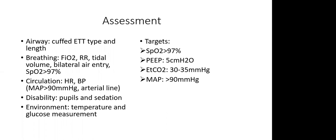Following the ABC approach, assess breathing: the FiO₂, tidal volume, and bilateral air entry. Importantly, it's not enough to just look at the SpO₂ — you need to know at what FiO₂ it was achieved. A patient with SpO₂ 97% at FiO₂ 0.6 is very different from one at FiO₂ 0.3. For circulation, assess heart rate and blood pressure, and ensure your MAP is greater than 90, especially because the blood-brain barrier has been disrupted.